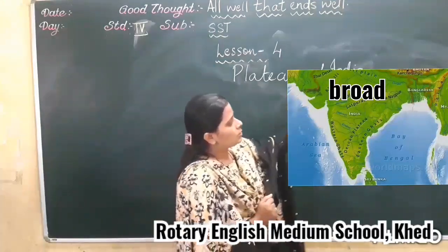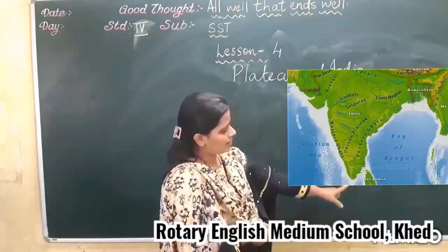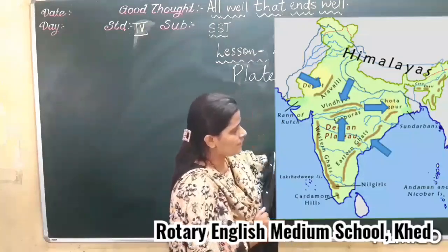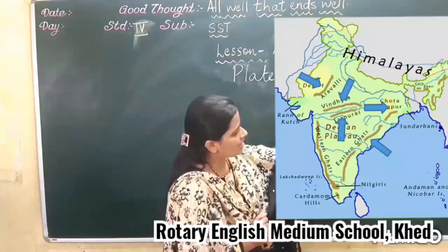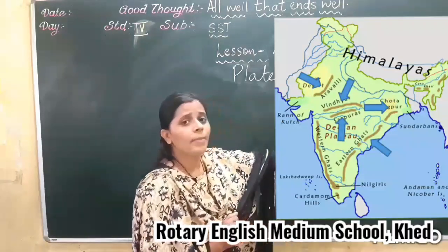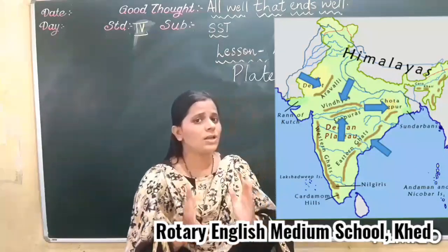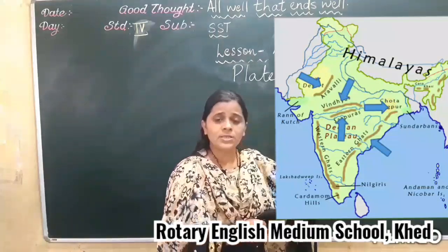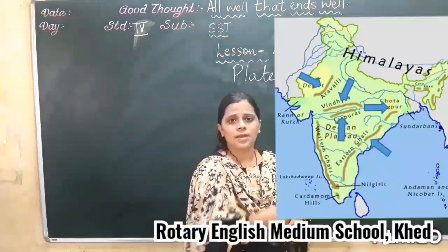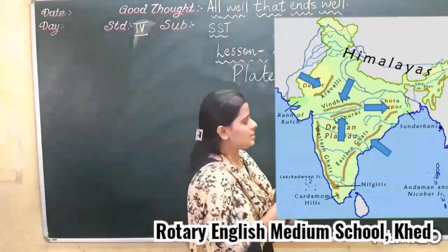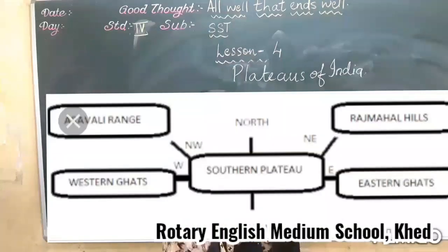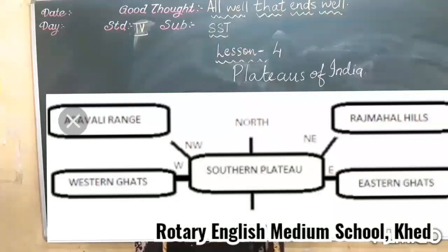It is broad on the north and narrow in the south. The peninsular plateau is surrounded by hills on all sides. You can see which hills surround it: Aravalli hills in the west — we discussed Aravalli hills in the third chapter, and the Indian desert is also there. Then Rajmahal hills, Eastern Ghats on the east, and Western Ghats on the west. It is surrounded by all these hills on all sides.